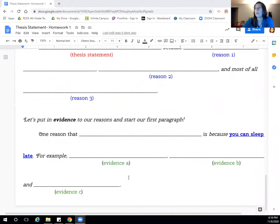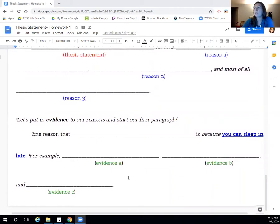And then from there, you can write yourself a topic sentence where you are going to list your claim. Here's your reason. And then you're going to give evidence to support the reason of sleeping in late.